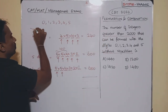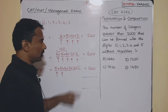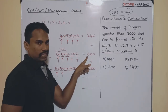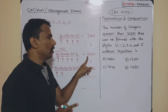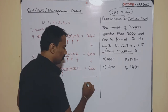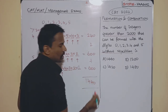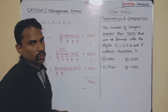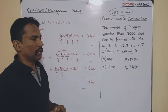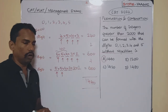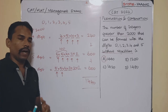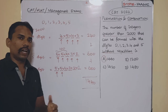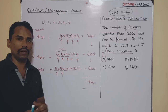Adding all possibilities: 240 (four-digit) + 600 (five-digit) + 600 (six-digit) = 1440. This matches option A, so the answer is 1440. Any doubts can be left in the comments — see you in the next session!